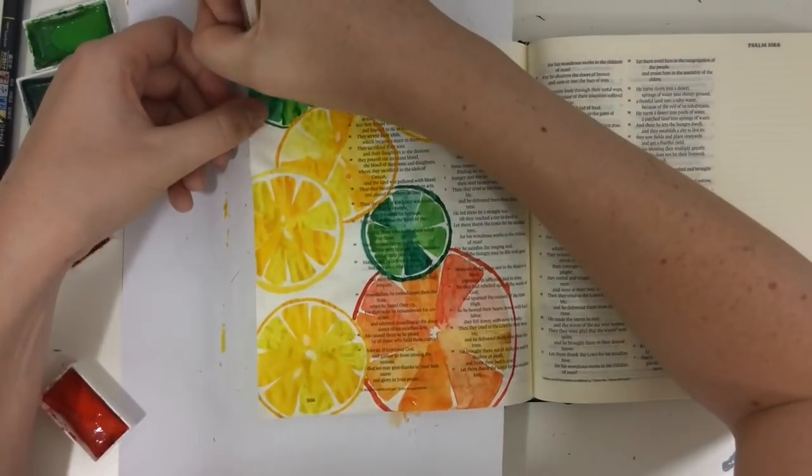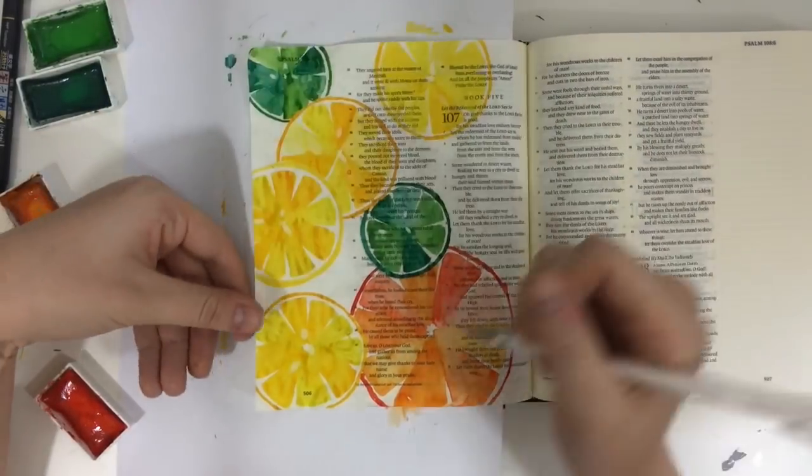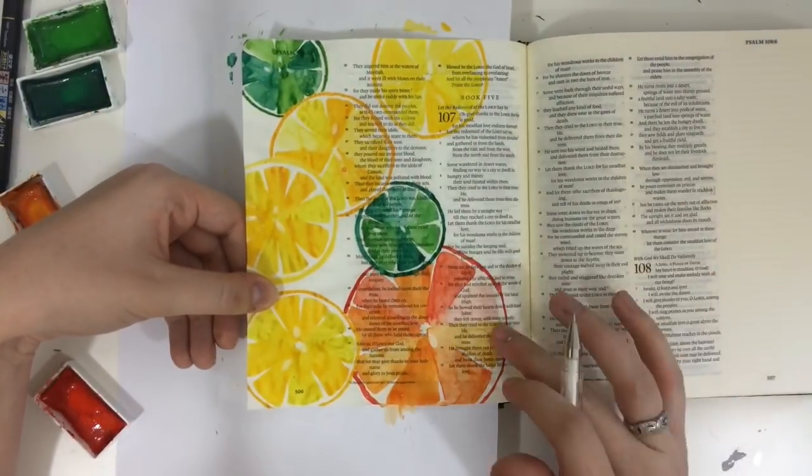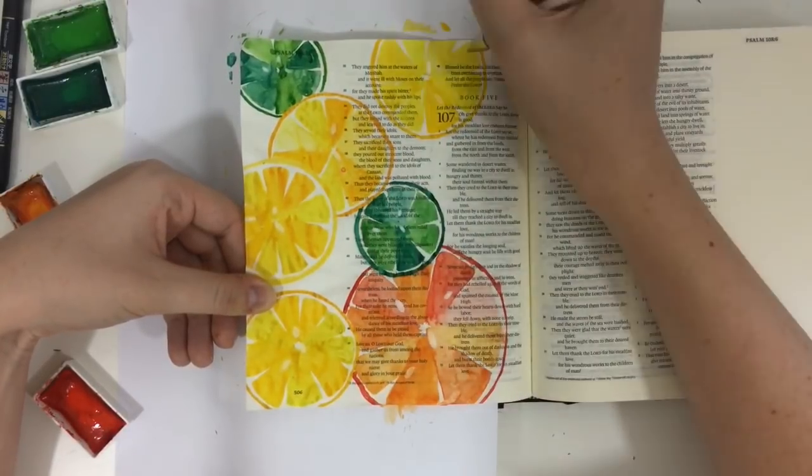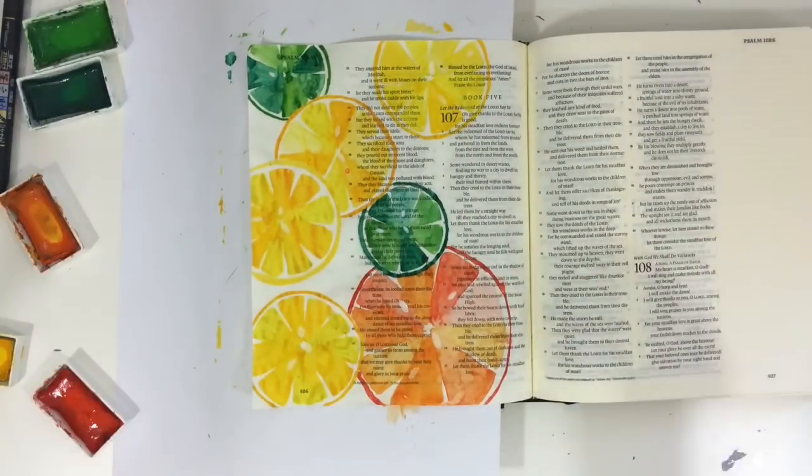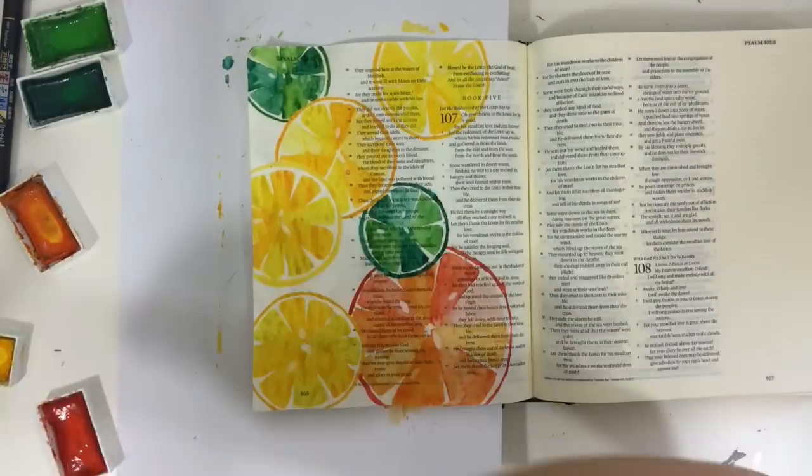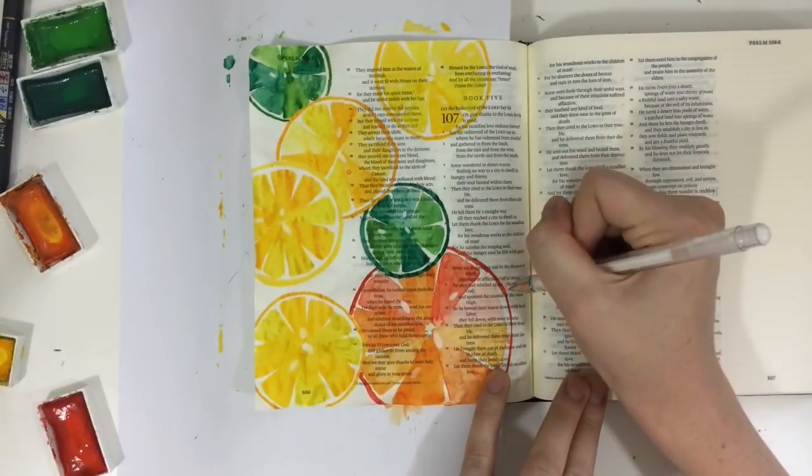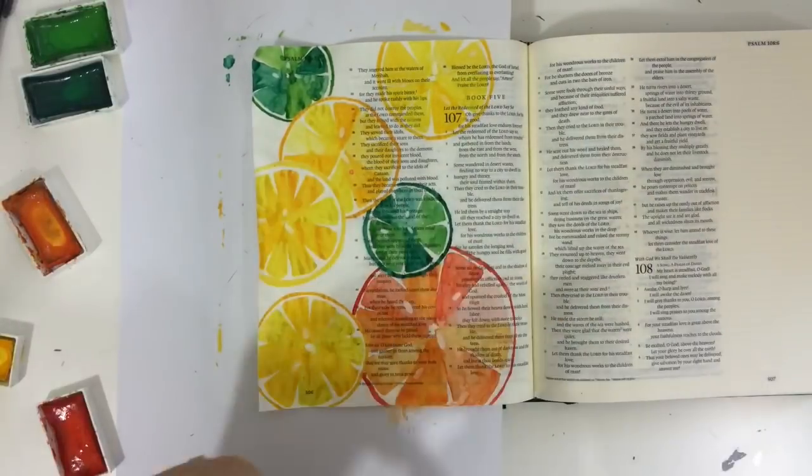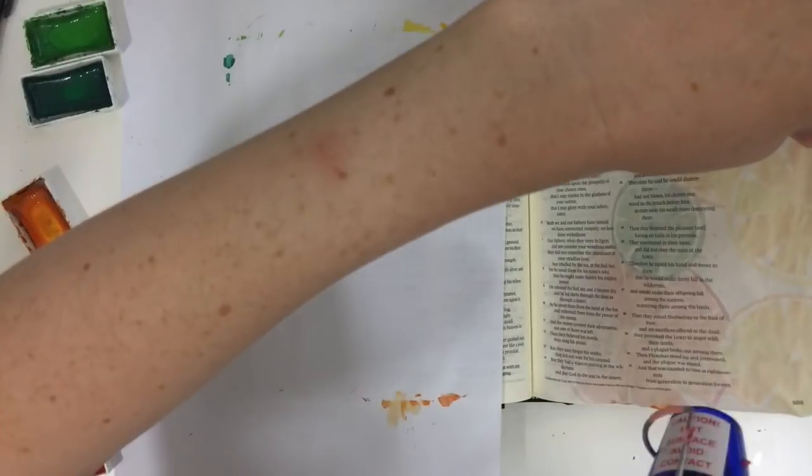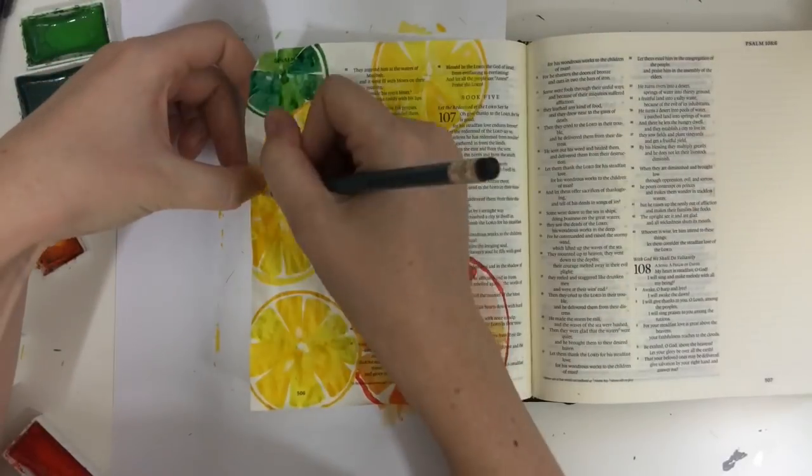I'm using my Uniball Signo gel pen, it's just a white gel pen, to add some little seeds. And they're just really basic oval shapes. I try to add about three to each of my fruit slices here. So I'm trying to do a few that are closer to the center and then maybe here and there I'll add one that's a little farther out from the center. And that's about it for the painting wise. I'm going to dry this with my heat gun and then go ahead and do my he satisfies lettering.